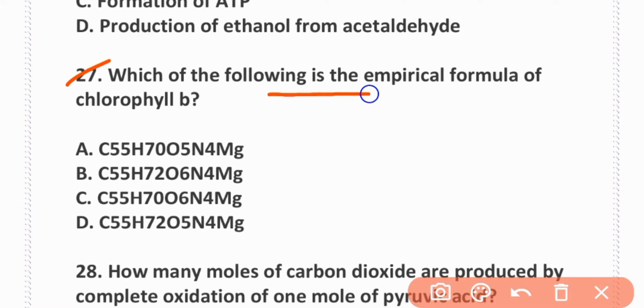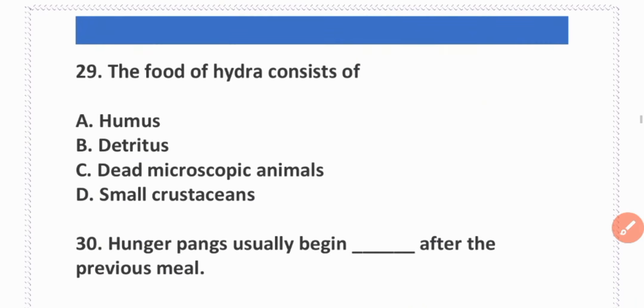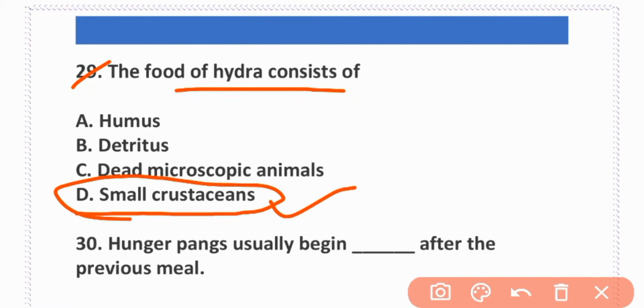Which of the following is the empirical formula of chlorophyll B? Option C. How many moles of carbon dioxide are produced by complete oxidation of one mole of pyruvic acid? Three. Option C, three. The food of Hydra consists of small crustaceans. Option D is correct.